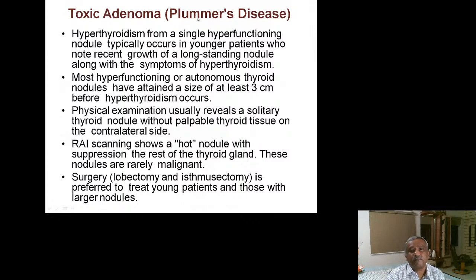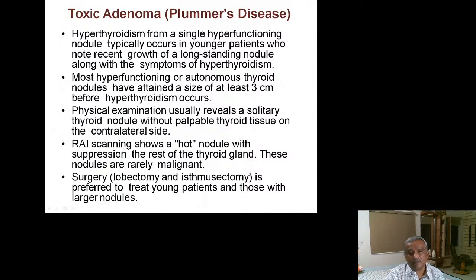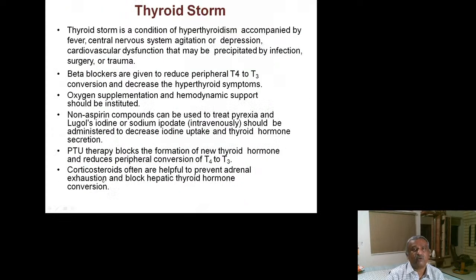Toxic adenoma (Plummer's disease) involves one hyperfunctioning autonomous adenoma — it must be at least 3 cm before hyperthyroidism occurs. Physical examination reveals a single nodule; iodine scan shows a single hot nodule. Preferred treatment is lobectomy or isthmectomy, especially for young patients and those with larger nodules.